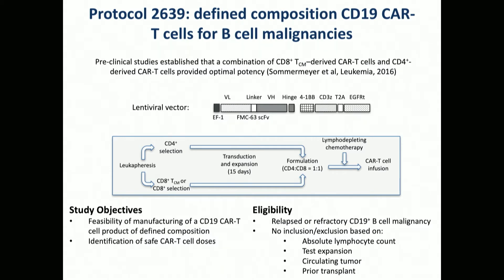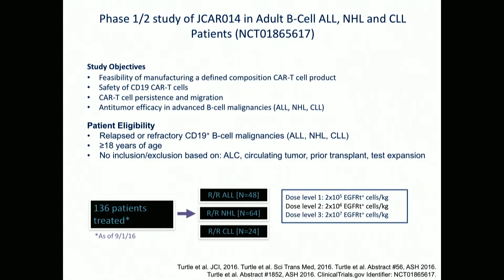This study was about feasibility, toxicity, and figuring out the right dose. There was no criteria based on lymphocyte count, test expansion, circulating tumor, or prior transplants. We have patients with allotransplants, haplotransplants, and cord blood transplants — we'll take literally anyone. I've taken patients with 100,000 circulating lymphoblasts, 99% marrow involvement, and ANCs of zero, and we can actually grow T-cells out of most of these populations. We've now treated 180 to 185 patients on this trial.